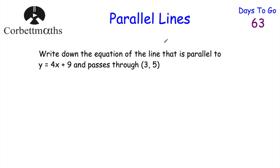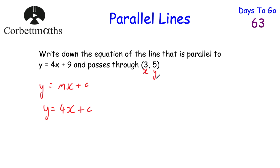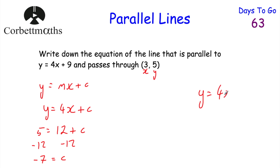The next question says: write down the equation of a line that's parallel to y equals 4x plus 9 and passes through the point (3, 5). This time the point is not on the y-axis, so we need to work out where it crosses. It will be y equals 4x plus c. Substituting x equals 3 and y equals 5: 5 equals 4 times 3 plus c, which is 12 plus c. Subtracting 12 from both sides gives c equals minus 7. So the equation is y equals 4x minus 7.